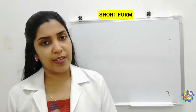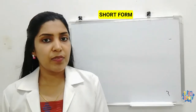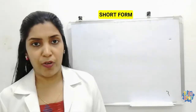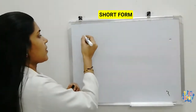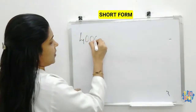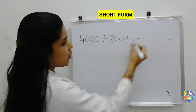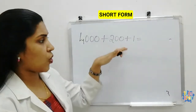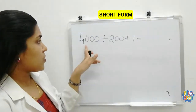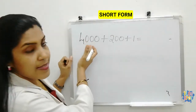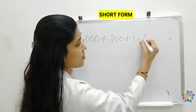Along with expanded form, we have to study about the short form — the opposite of expanded. So whatever we expanded, we can convert back into the usual form. That is what we call short form. For example, 4,000 plus 200 plus 1. So how to write the short form? 4,000 means 4 is in the thousands place.